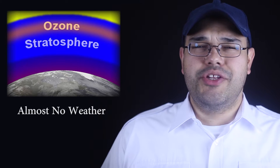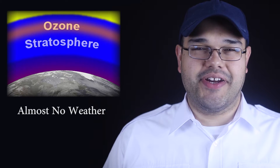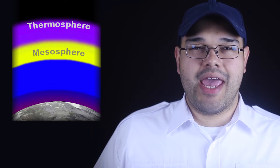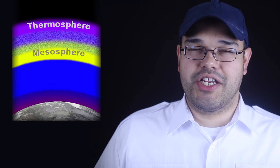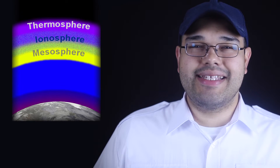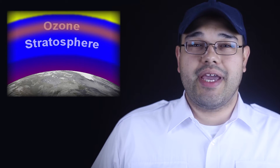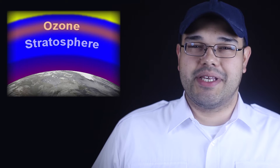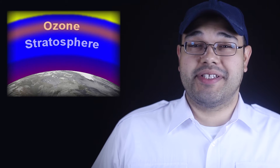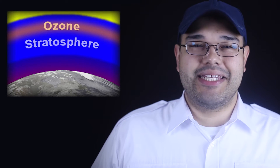Within the main layers of the atmosphere are some secondary layers of interest. Within the mesosphere and thermosphere, we have the ionosphere, a layer of ionized gas that influences radio transmissions. Within the stratosphere is the ozone layer, which absorbs UV radiation from the sun, resulting in the previously mentioned temperature rise.